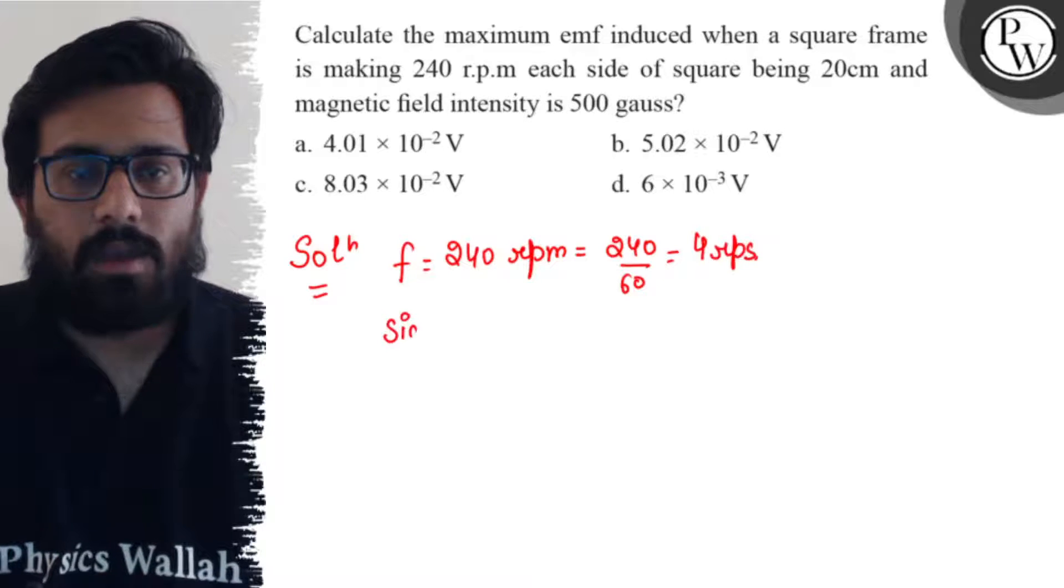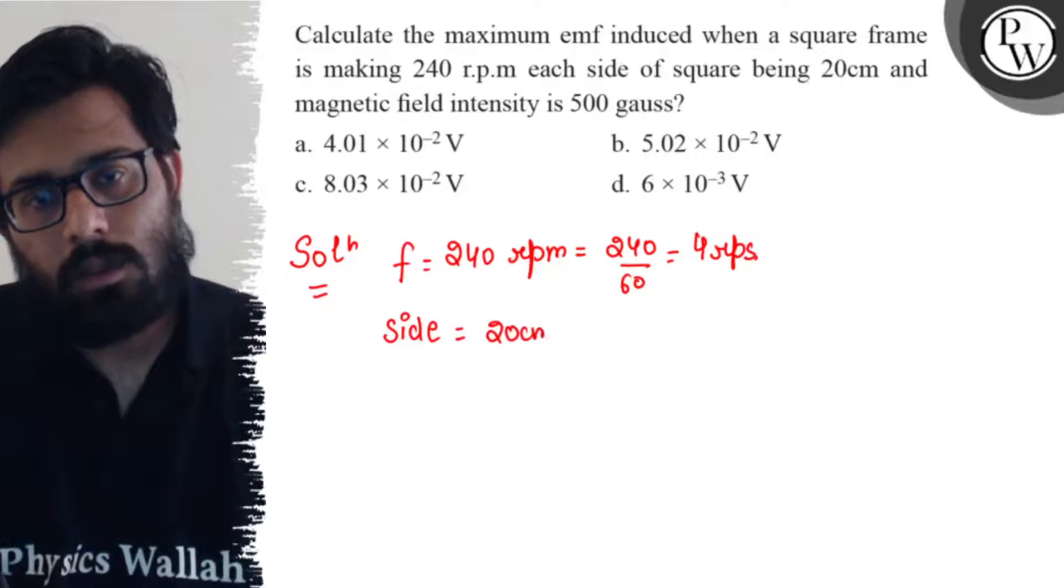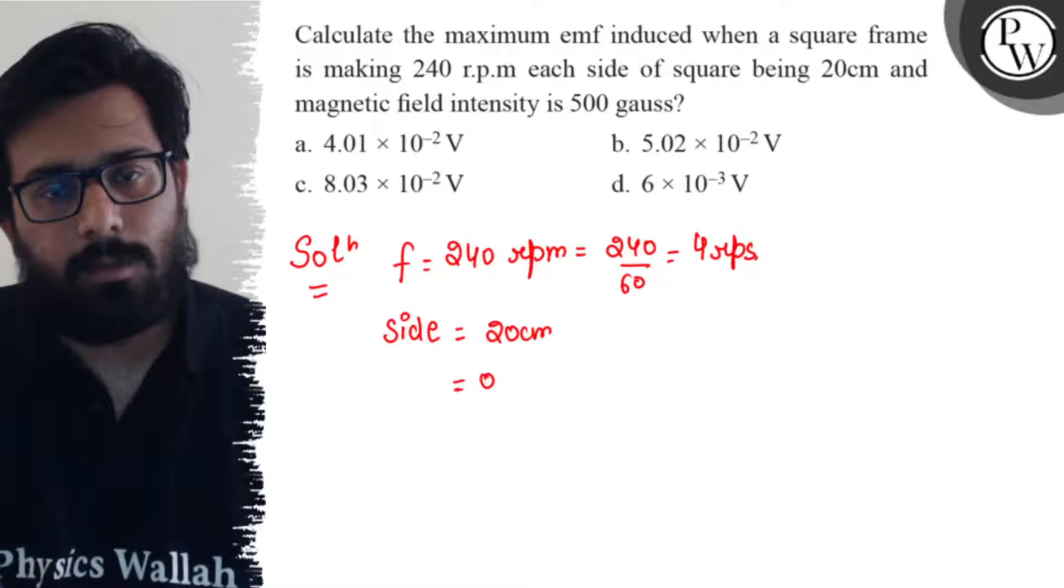Side of the square is given as 20 centimeter. Converting to meter, this becomes 0.2 meter.